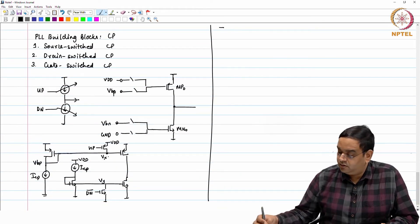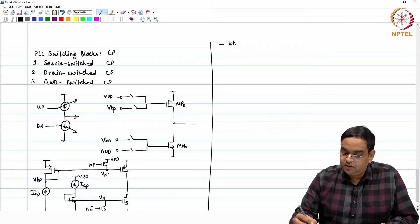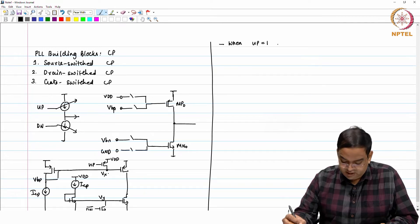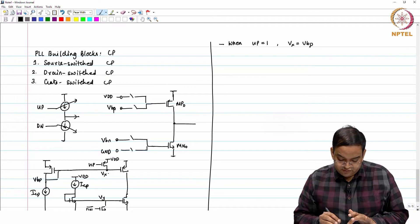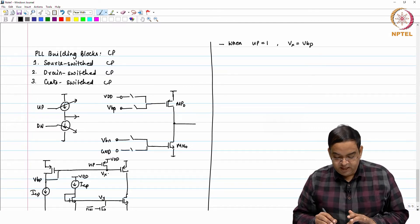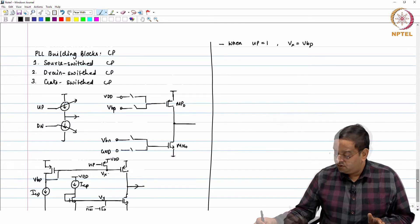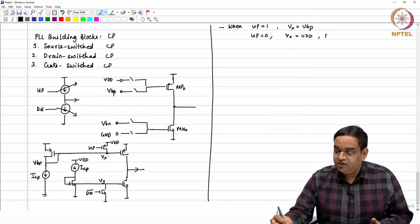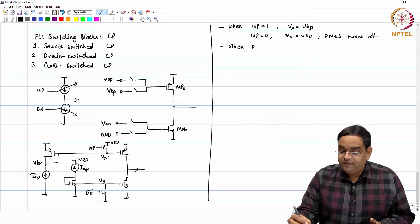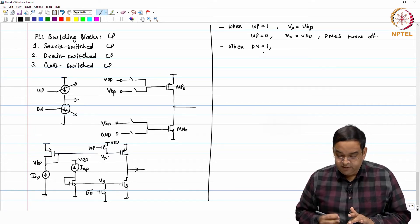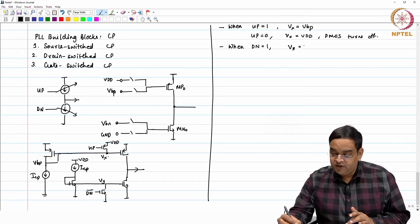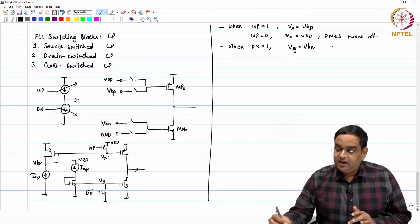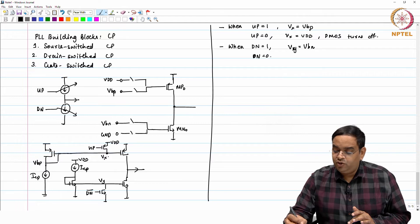When up is equal to 1, at that time Vx is equal to VBP because up is 1 PMOS is not active, this node is pulled to VDD. Current source is off. And when up is equal to 0, Vx is equal to VDD and PMOS turns off. When you have down as 1, at that time Vy potential is VBN and when down is 0, at that time Vy potential is pulled down to 0 and NMOS is turned off.